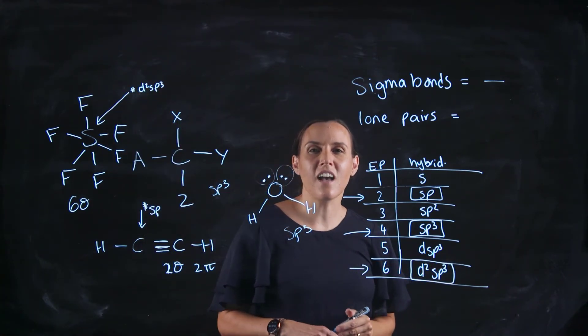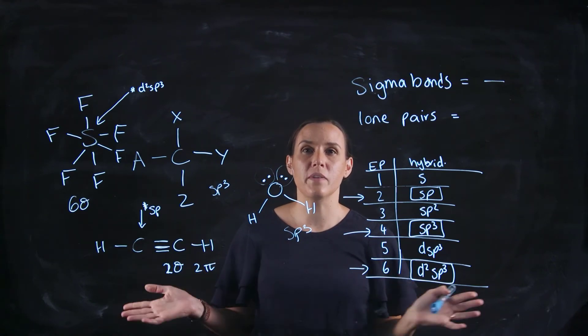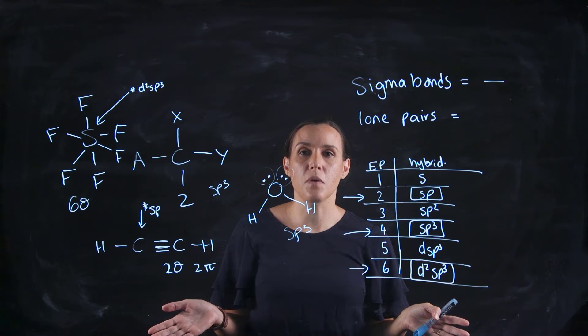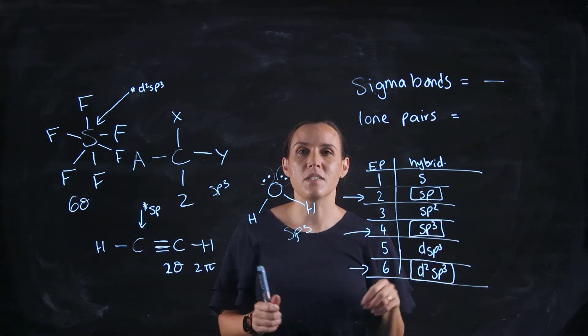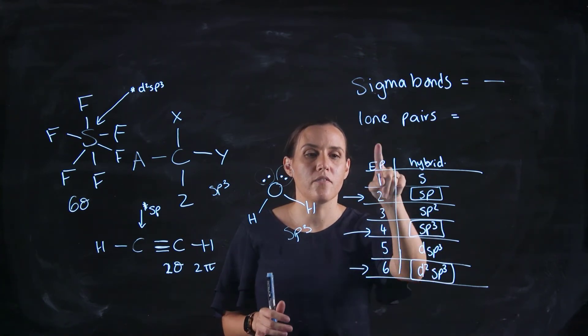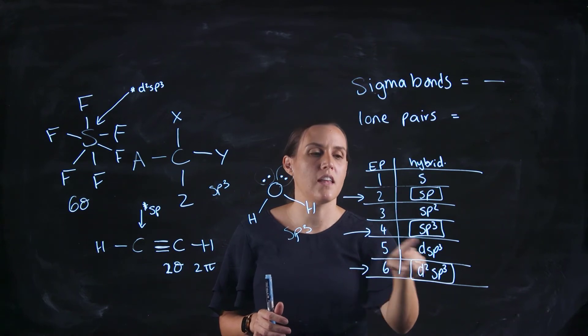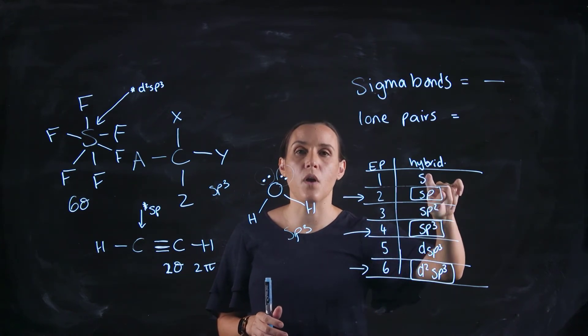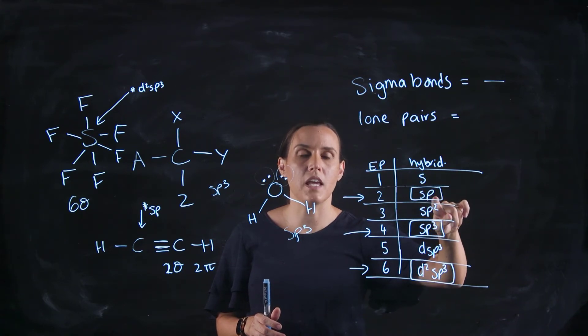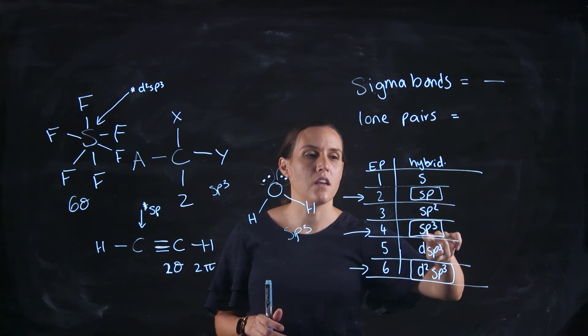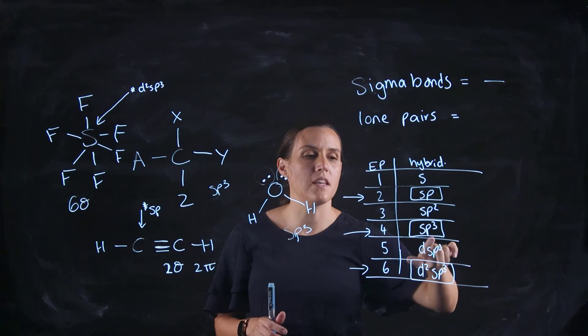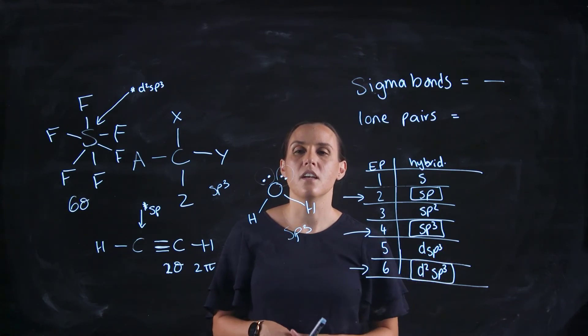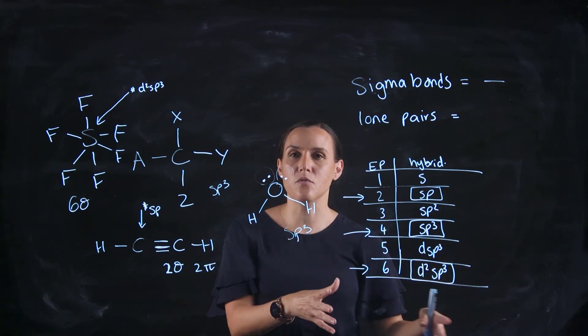So it sounds like a hard concept but it's actually extremely easy. Counting sigma bonds, counting the lone pairs, classify them as effective pairs that you're going to be counting. Find out how many you've got and then go across on the table. The way I built this table was I started with 1 s orbital, I added in a p, added in another p, 3 p's, used up all my p's, then I brought in my d and another d, and I keep going. So it's fairly easy to reproduce.